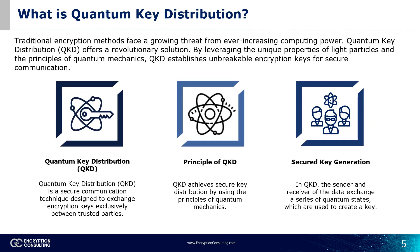Let's delve deeper into quantum key distribution, a subset of quantum encryption. Unlike traditional encryption methods, which transmit keys over public networks, QKD ensures secure key distribution exclusively between trusted parties. By leveraging the principles of quantum mechanics, QKD exchanges quantum states between sender and receiver to generate a secure key. Any attempt to intercept these quantum states would disrupt the communication, allowing for the detection of eavesdropping. This is a major differentiator compared with traditional cryptographic algorithms. In essence, QKD revolutionizes key distribution by employing quantum mechanics to guarantee unmatched security.